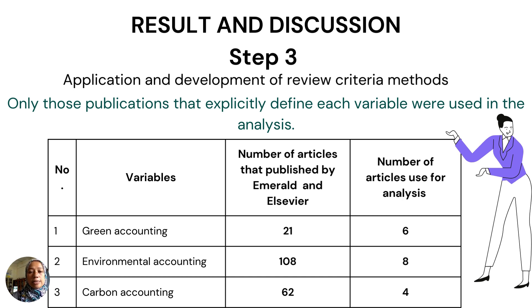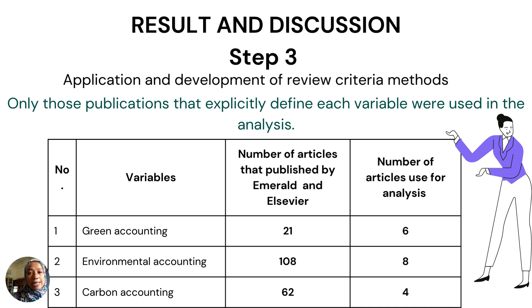Step three is the application and development of review criteria methods. Only publications that explicitly define each variable were used in this analysis. For the three variables, the number of articles published by Emerald and Asaphir is 21 for green accounting, 108 for environmental accounting, and 62 for carbon accounting. However, only several journals explicitly define each variable, so the number of articles used for analysis is six for green accounting, eight for environmental accounting, and four for carbon accounting.